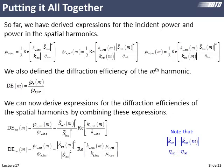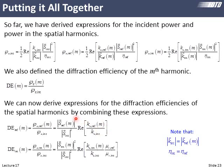Putting it all together: we define diffraction efficiency of the reflected modes as the z-component of the reflected mode's Poynting vector divided by that of the applied wave. Substituting our expressions in and simplifying, we get an equation with kz_m / |k_inc| times |S_m|² over impedance. Analytically we know all the k-components; the simulation tells us the amplitudes of the diffracted modes. A very similar equation applies for the transmitted diffraction orders.